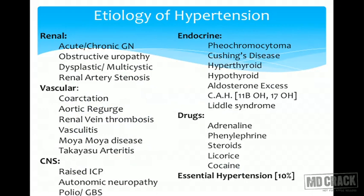The most common causes of hypertension are renal and vascular — renal causes like glomerulonephritis and renal artery stenosis are commonest. Endocrine causes include Cushing's disease, pheochromocytoma, hypo- or hyperthyroidism, and aldosterone excess. Vascular causes such as autoimmune vasculitis, Moyamoya disease, and Takayasu's arteritis are less common. Autonomic neuropathy seen in polio and Guillain-Barré syndrome can sometimes cause hypertension. Essential hypertension can only be labeled after ruling out all underlying organic causes.